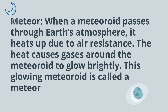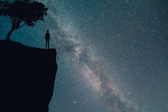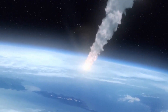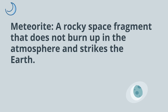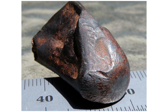In this clip you can see some of the meteors flash by. A meteorite is what a rocky space fragment is called if it does not burn up in the atmosphere and strikes the Earth. Here are some pictures of actual meteorites that struck the Earth.